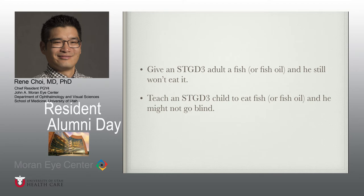To conclude: give an adult patient with dominant Stargardt's a fish or fish oil and he still won't eat it — but teach a child with dominant Stargardt's to eat fish or fish oil and he might not go blind.